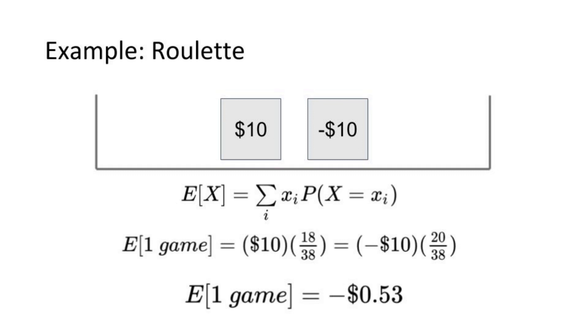Doing the math of weighted values, that's just $10 times the probability of getting $10 plus negative $10 times the probability of losing $10. And because losing is more likely than winning, our expected value is negative 53 cents.